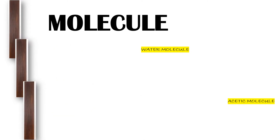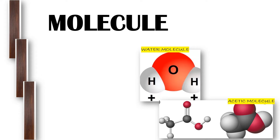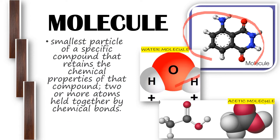Next we have the molecule. This is an example of the molecule of acetic acid, and this is the molecule of water, and here are structures of certain molecules found in living things. A molecule is the smallest particle of a specific compound that retains the chemical properties of that compound — two or more atoms held together by chemical bonds. Molecules are composed of two or more atoms, such as hydrogen and oxygen.